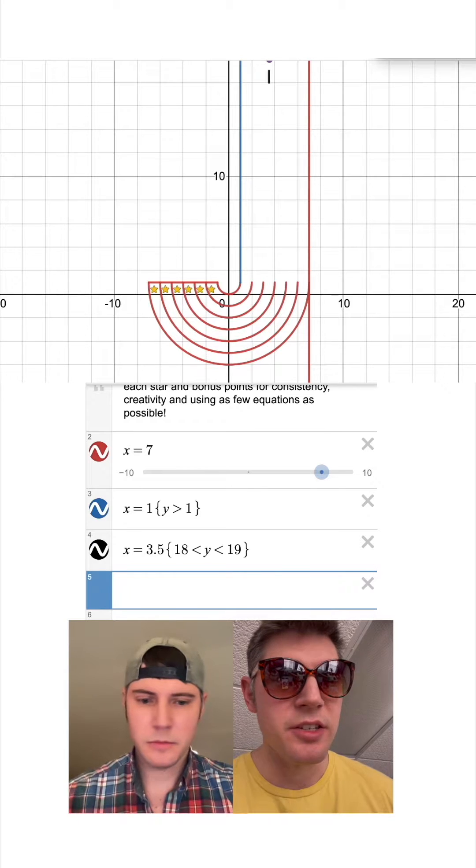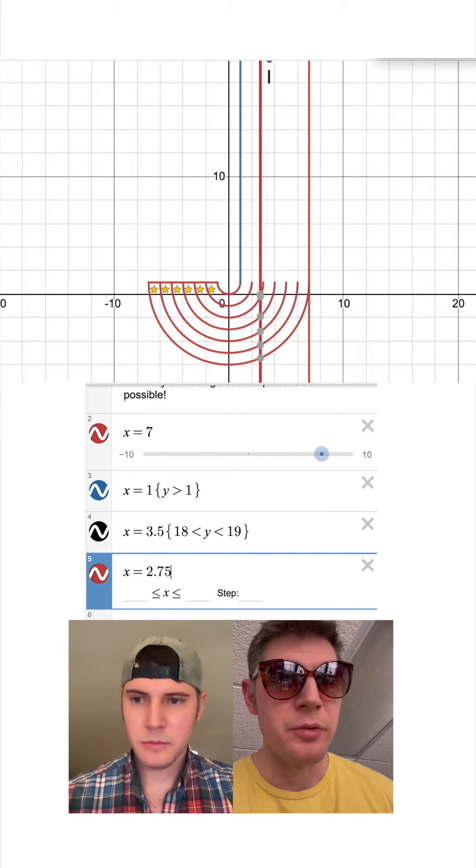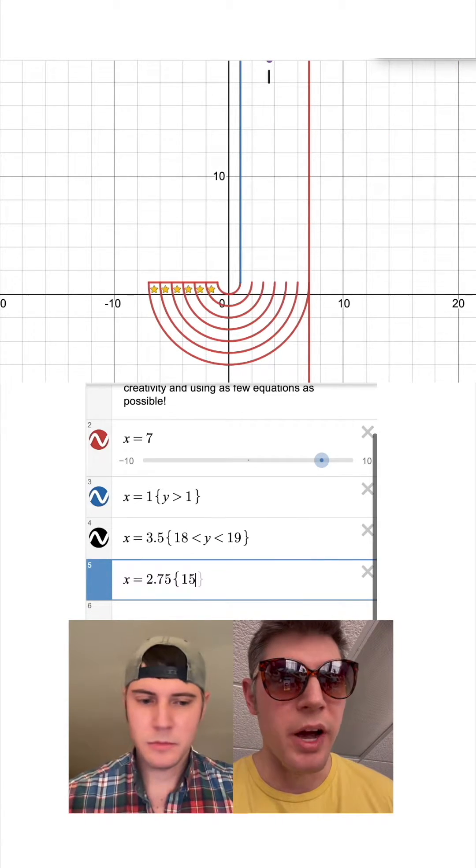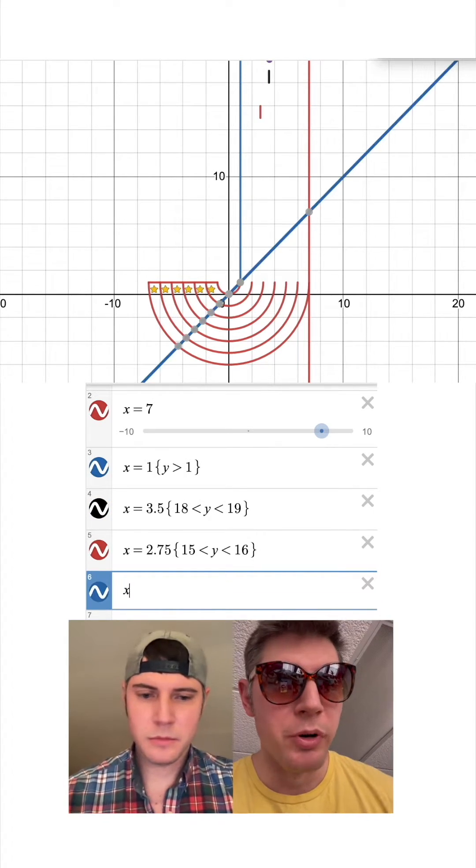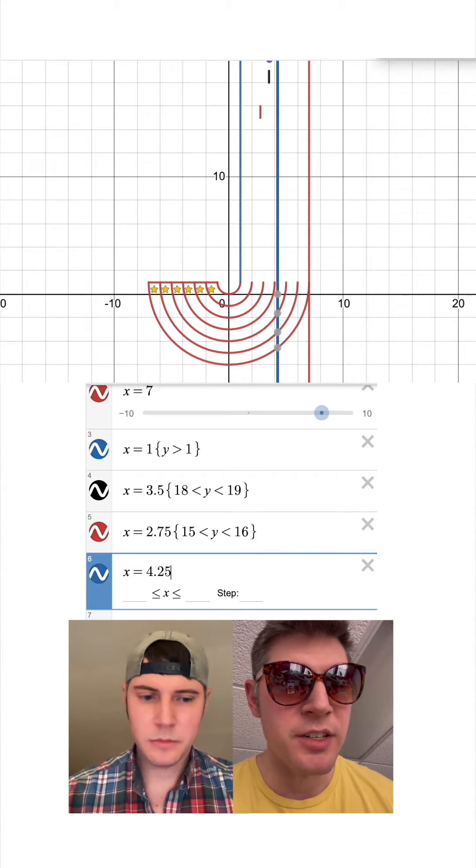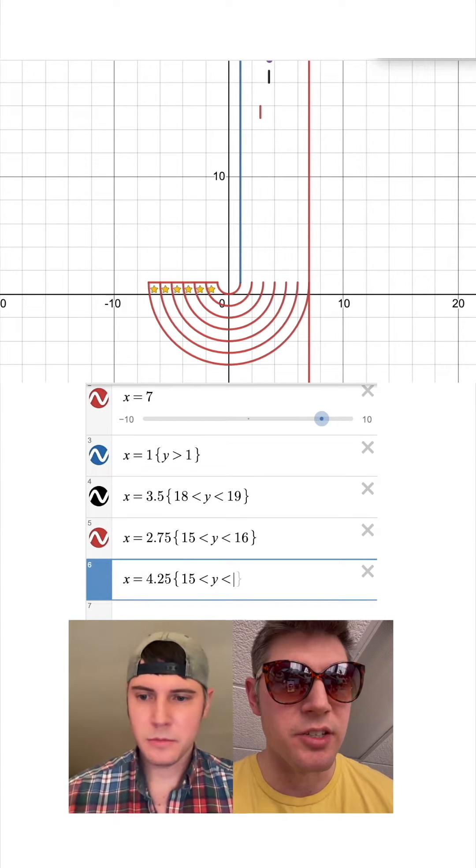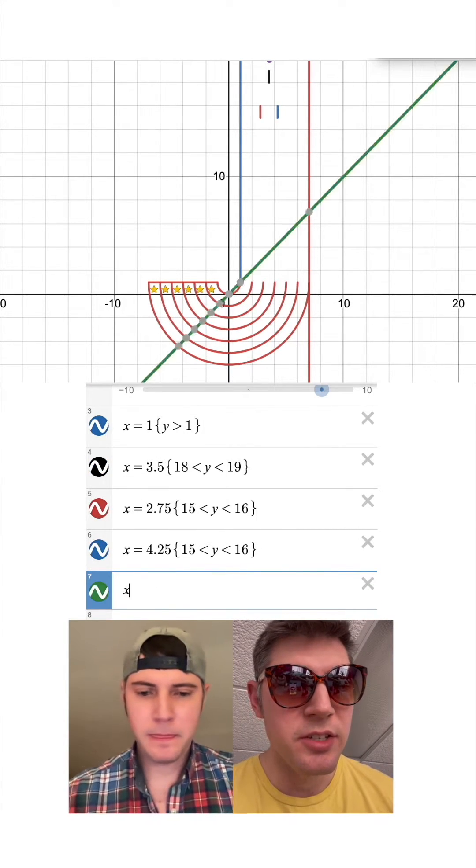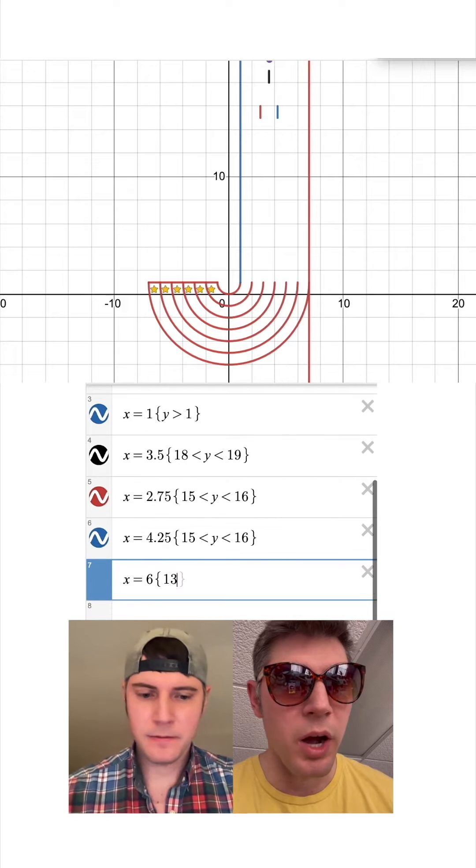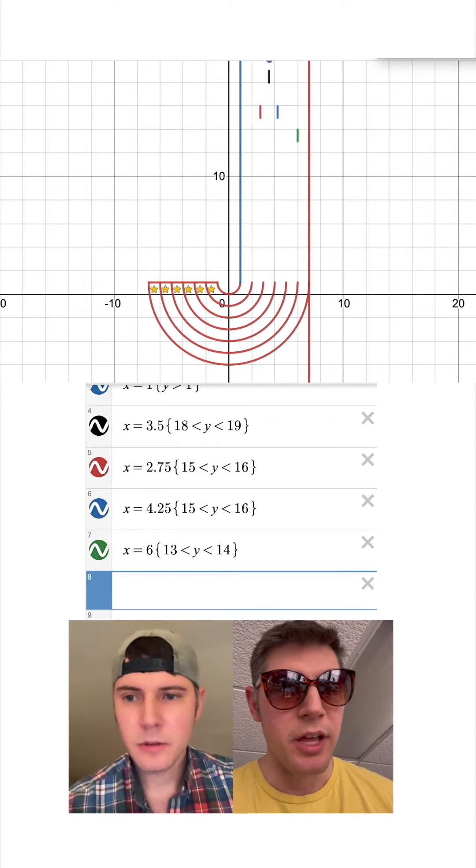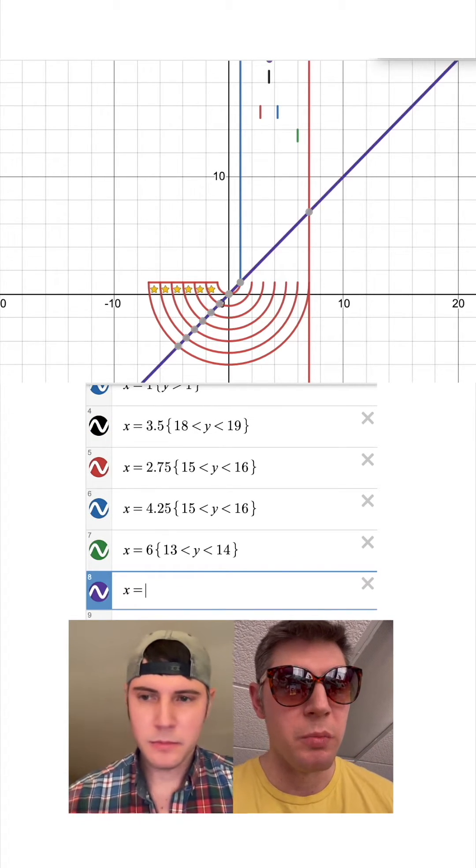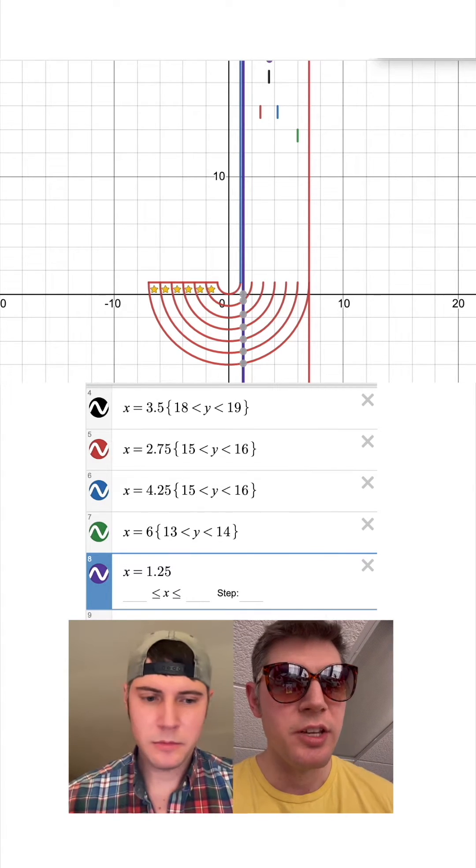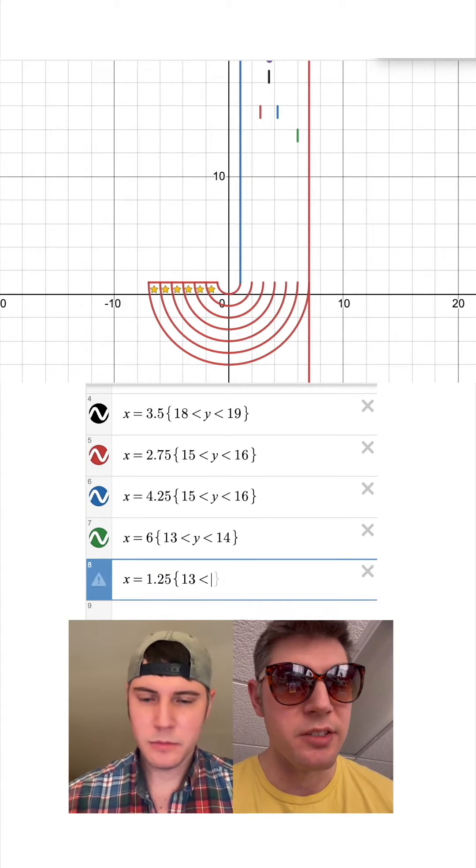The restriction is 15 is less than Y is less than 16. The next one is X equals 4.25, the restriction is 15 is less than Y is less than 16. And then X equals 6, it's 13 is less than Y is less than 14. And for the last one, I got X equals 1.25, and the restriction is 13 is less than Y is less than 14.